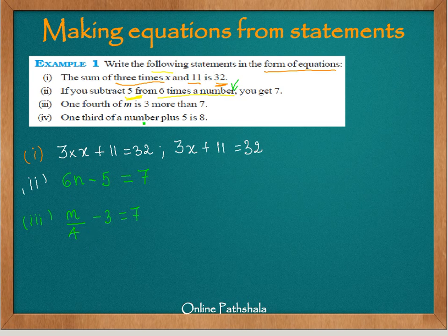Now let's look at the fourth. 1 third of a number plus 5 is 8. Now this is a bit straightforward. The fourth one is straightforward. 1 third of a number. Let's take that number as q. 1 third of a number, that is q by 3 plus 5. So I am just adding 5 to it. It is equal to 8.